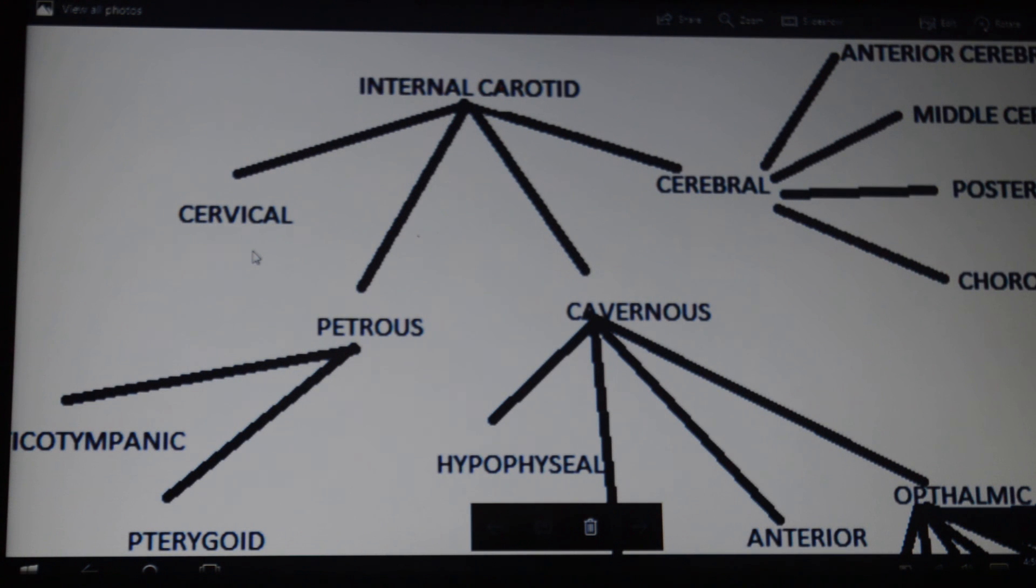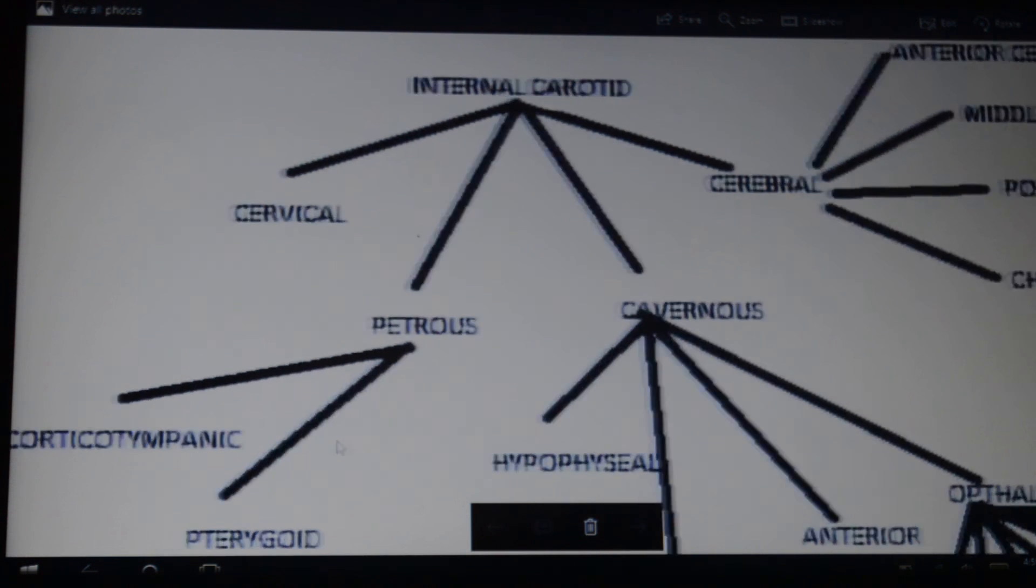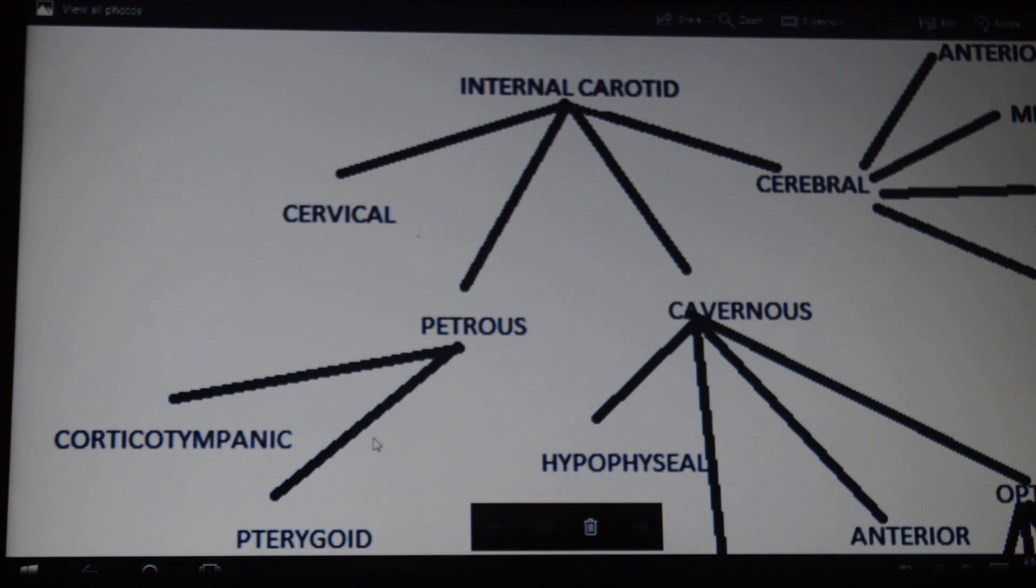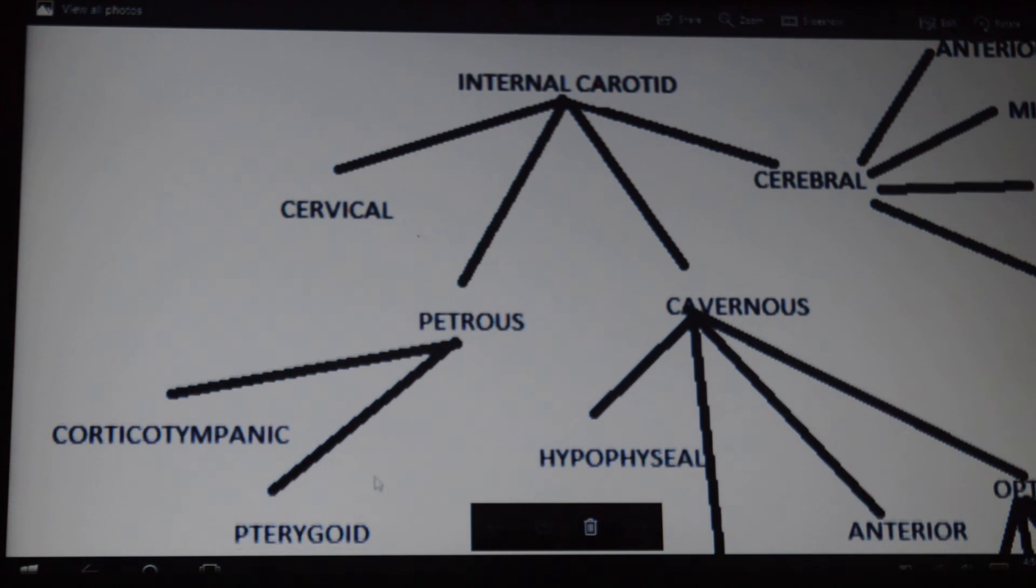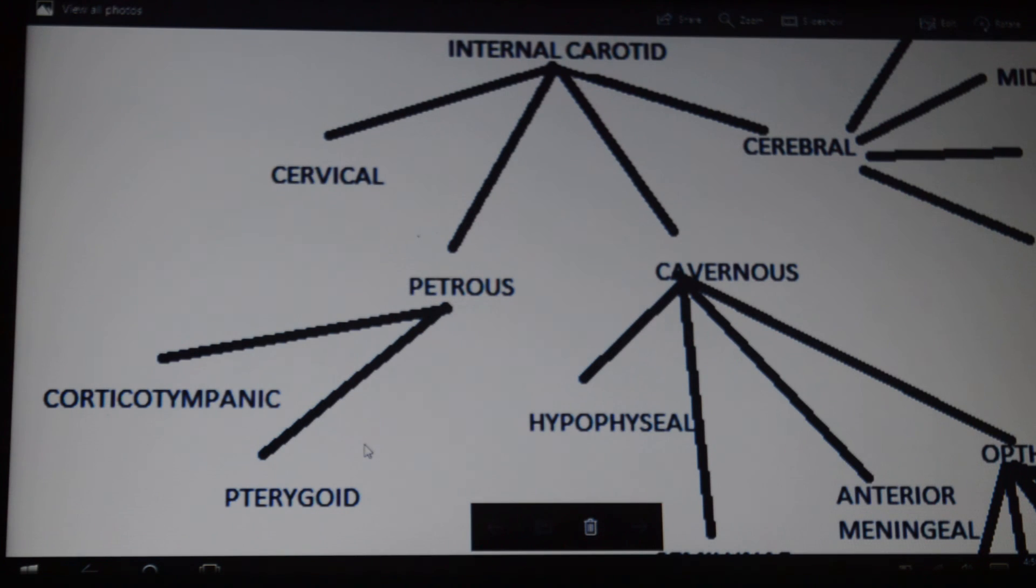The cervical region has no branches. Next comes the petrous part, which has two branches: corticotympanic and pterygoid. The petrous portion goes to the petrous region of the temporal bone. Corticotympanic supplies blood to the tympanic area of the temporal bone, and the pterygoid supplies via the pterygoid canals.